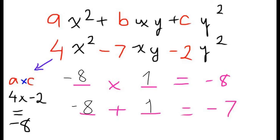The two numbers I got was negative 8 and 1. So negative 8 times 1 equals negative 8, and negative 8 plus 1 equals negative 7.